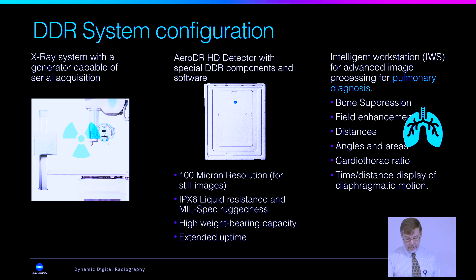400 micron resolution for the motion pictures. But that's still very high resolution when you're talking about the fact that motion is now a new dimension of imaging.